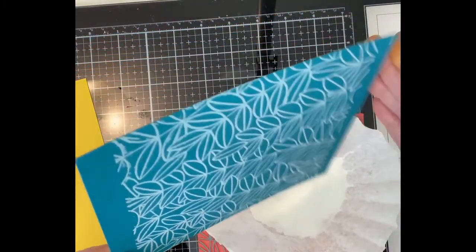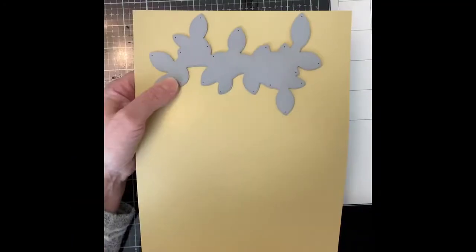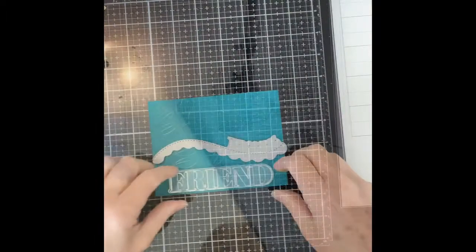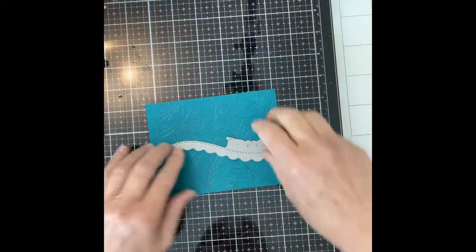When all the panels are embossed, I die-cut Simon Says Stamp's clustered leaves from matte gold cardstock. At this point, I start working on the cards one at a time.